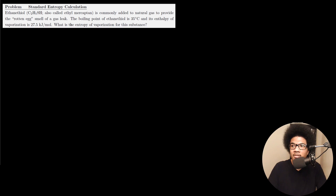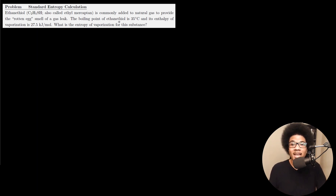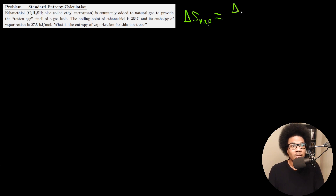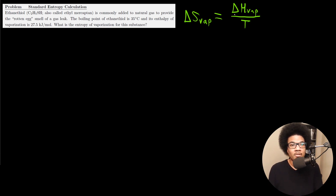The next example: ethane thiol is commonly added to natural gas to provide the rotten egg smell of a gas leak. Its boiling point is 35 degrees C and its enthalpy of vaporization is 27.5 kilojoules per mole. What is the entropy of vaporization? For a phase change, we don't distinguish between system and surroundings — we directly calculate delta S vaporization as delta H vaporization over the temperature of the phase change.